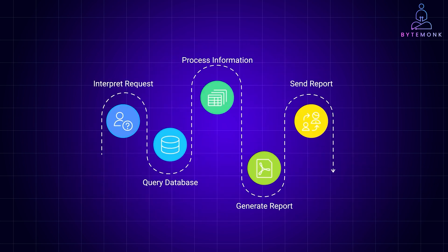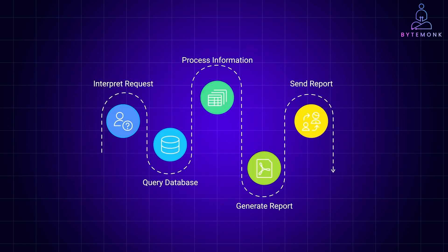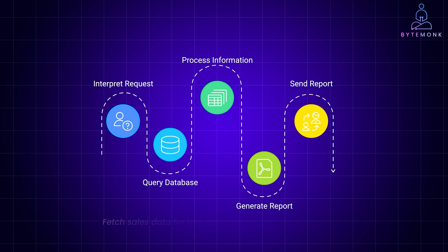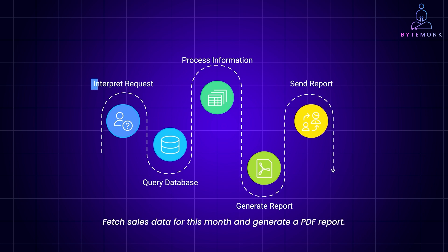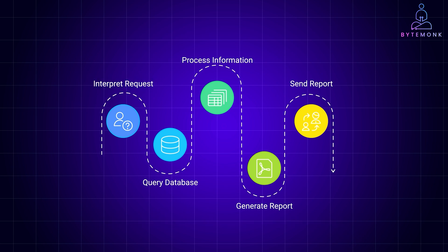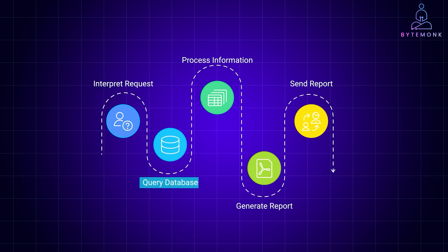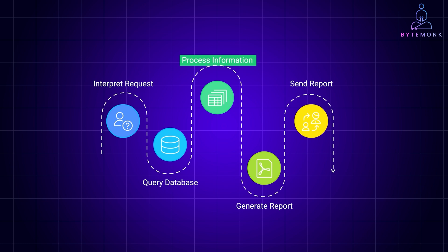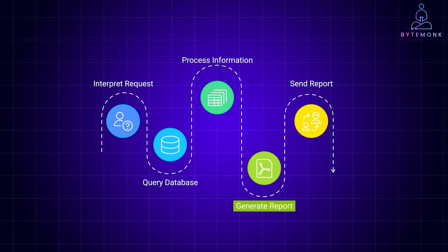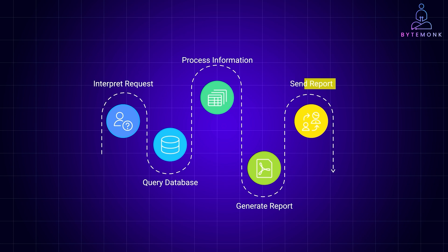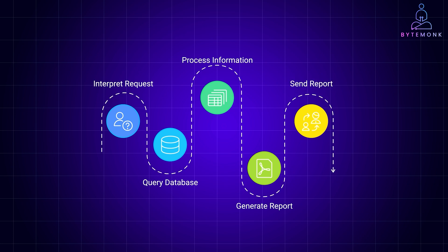LAMs are designed to work towards specific goals efficiently and autonomously. Let's say you tell a LAM, 'Fetch sales data for this month and generate a PDF report.' The LAM interprets the request and identifies each step required — it queries the database for the relevant data, processes and organizes the information, and finally generates the report and can even send it via email. With LAMs, there is no more manual labor of pulling data into spreadsheets. They handle everything, start to finish.